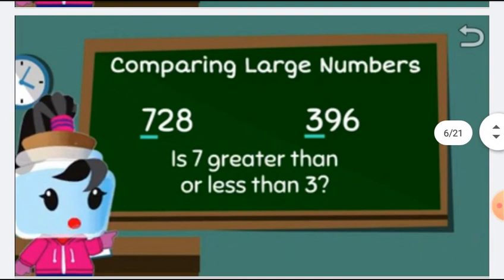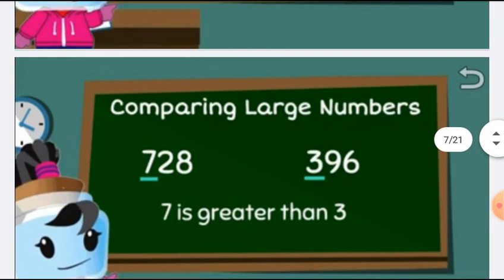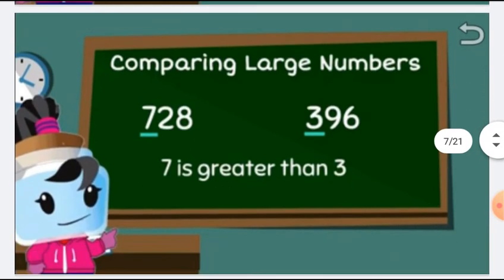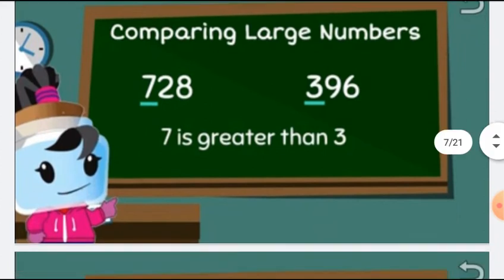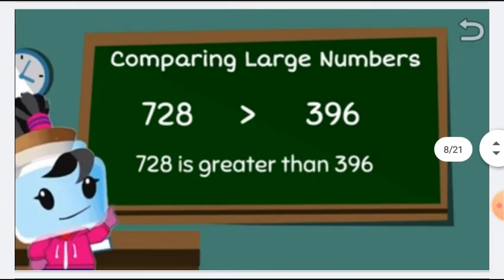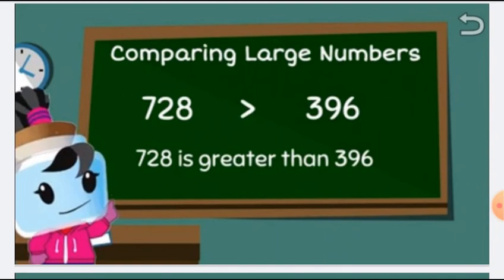Is 7 greater than or less than 3? Think — 7 is greater than 3. So, 728 is greater than 396. We will put this sign to show that 728 is greater than 396.